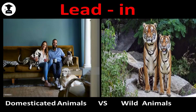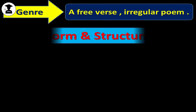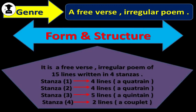Have you asked yourself before what is the genre of this poem? Yes, it is a free verse, irregular poem. What about the form and the structure of this poem? It is a free verse, irregular poem of 15 lines written in 4 stanzas. Stanza 1 consists of 4 lines and it is called a quatrain. Stanza 2 also consists of 4 lines, a quatrain. Stanza 3 consists of 5 lines, and Stanza 4 only 2 lines and it is called a couplet.